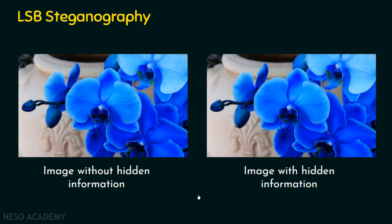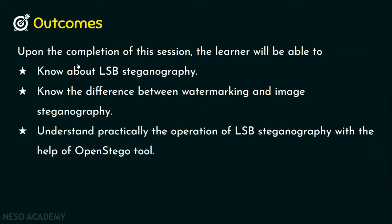This demonstrates the working of LSB steganography using the OpenStego tool. The original image and the stego image look identical, but the stego image contains the hidden message. If someone is given only the stego image, there is no way to know that a message is hidden inside. I hope you now understand LSB steganography, the differences between watermarking and image steganography, and have seen practically how LSB steganography works with OpenStego. Thank you for watching and I'll see you in the next presentation.